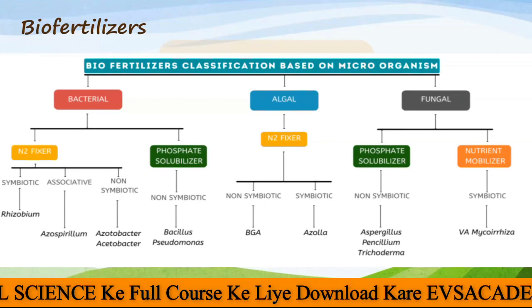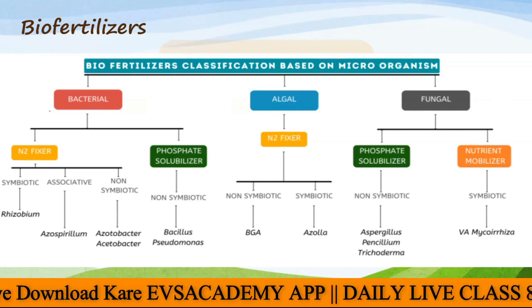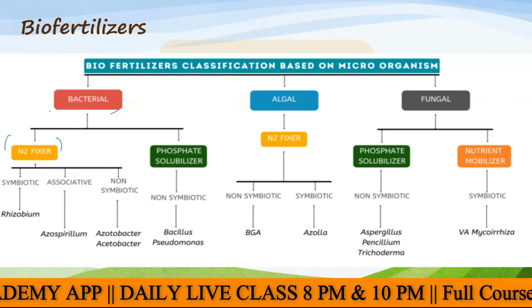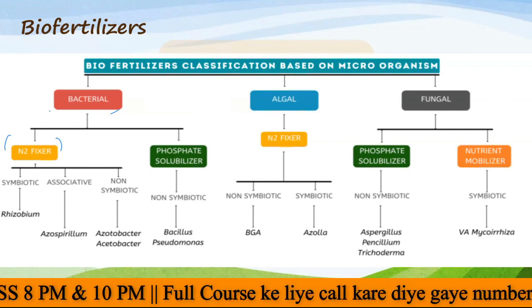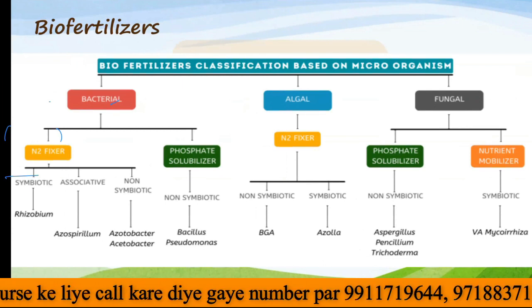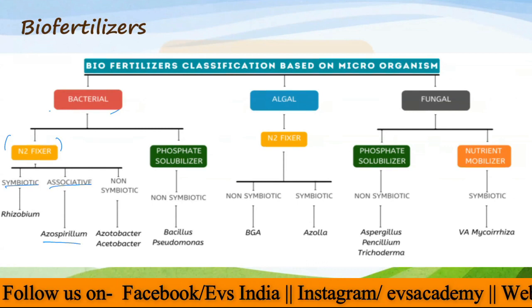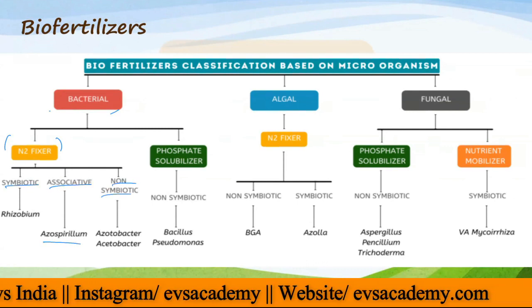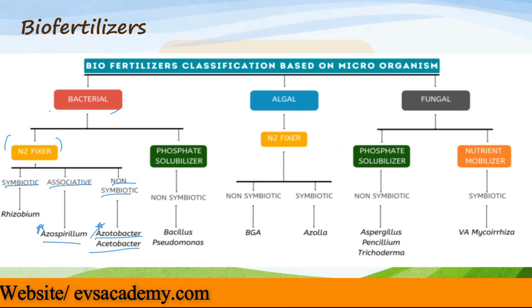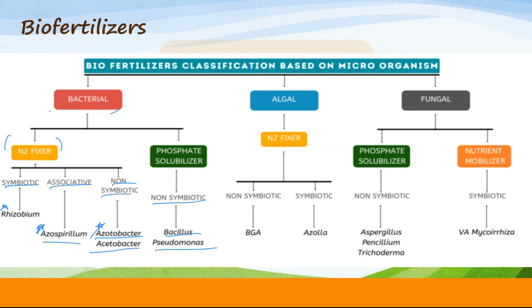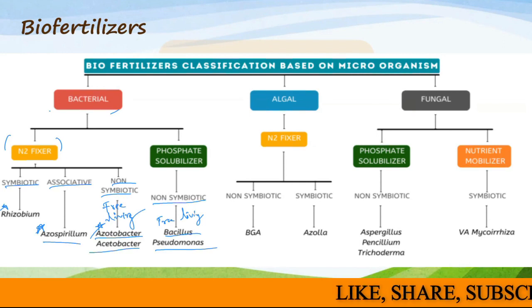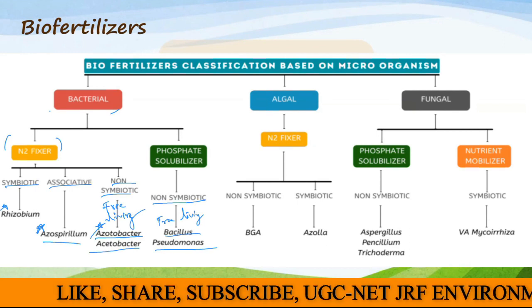Then we have bio-fertilizers, which are divided into multiple types. One type is bacterial. Under bacterial bio-fertilizers, we have nitrogen fixers, which are of multiple types: symbiotic — example Rhizobium; associative — example Azospirillum; and non-symbiotic (free-living) — examples are Azotobacter and Acetobacter, both very important. We also have phosphate-solubilizing bacteria, which are non-symbiotic or free-living — examples are Bacillus and Pseudomonas. In examinations, they often ask which is a free-living phosphate solubilizer or free-living nitrogen fixer.